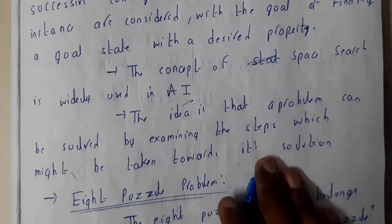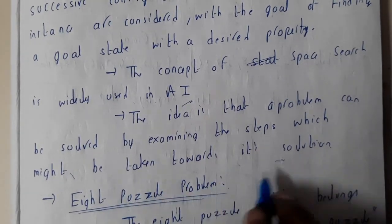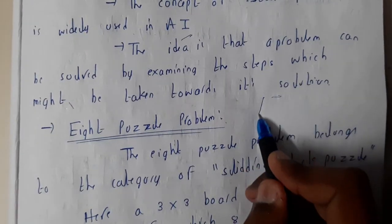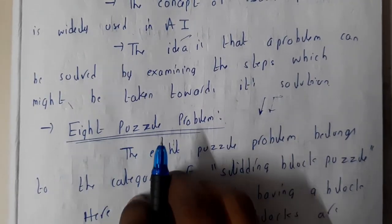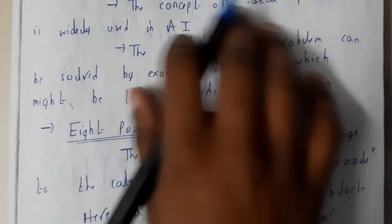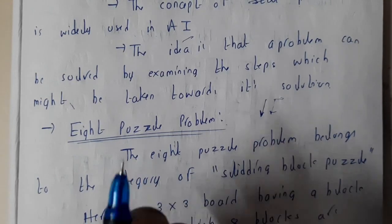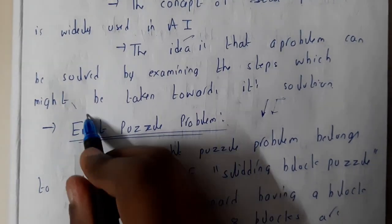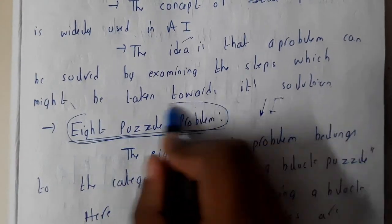Here, you'll be writing all the possibilities, and you'll be going like a tree, step by step, until you reach your goal node. One of the popular problems in this is the eight puzzle problem. From the name, we can say eight puzzle, so there will be eight numbers.